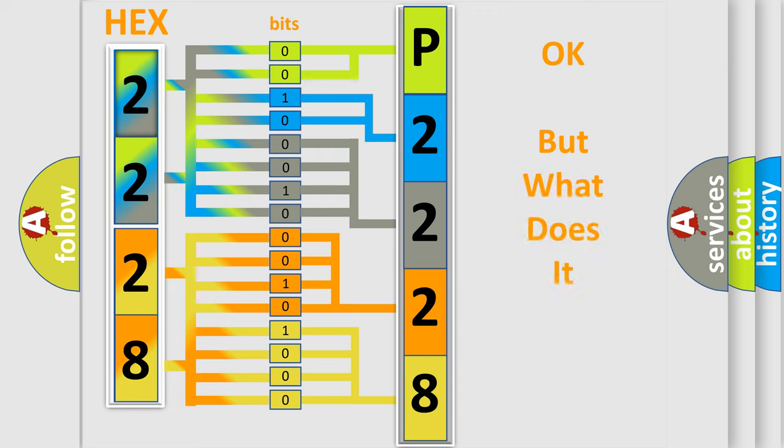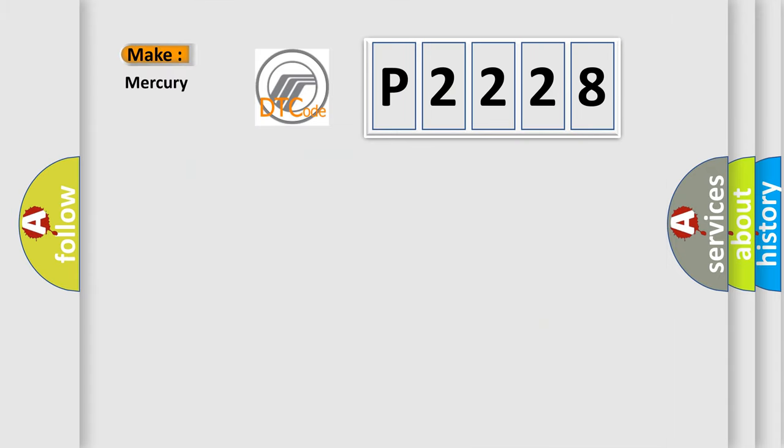The number itself does not make sense to us if we cannot assign information about what it actually expresses. So, what does the diagnostic trouble code P2228 interpret specifically for Mercury car manufacturers? The basic definition is loss of IRC communications.